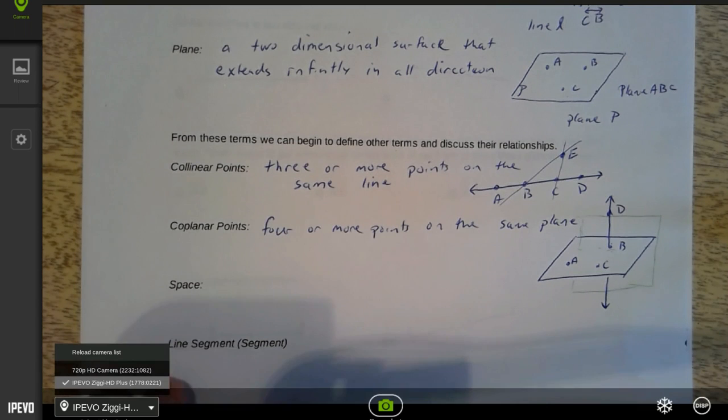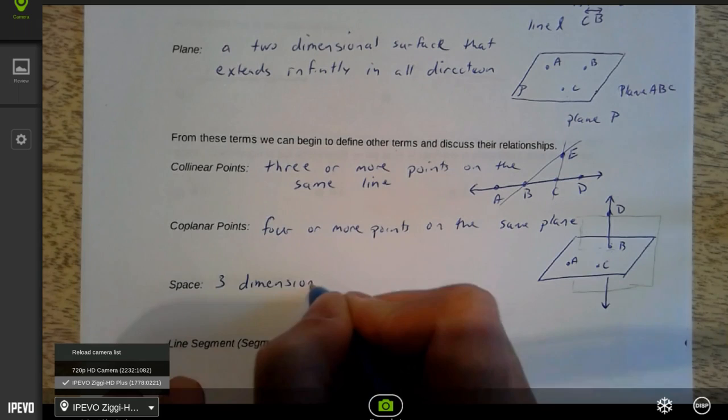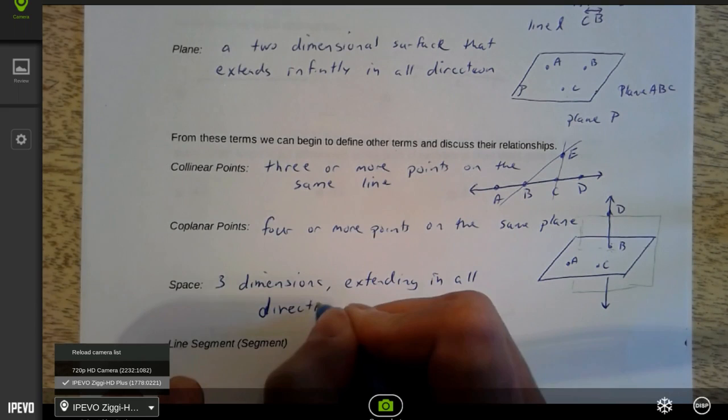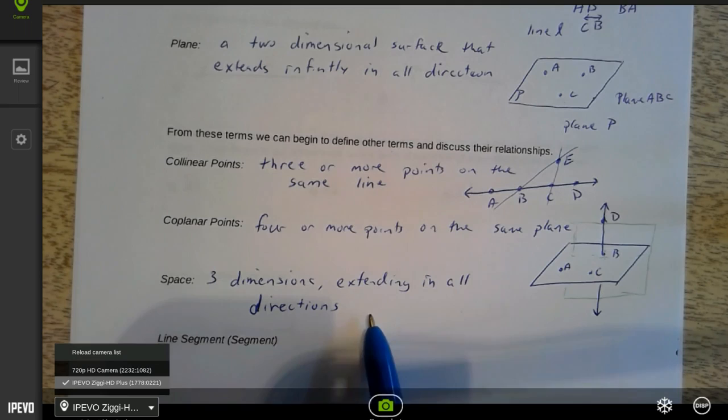Speaking of three-dimensional, that's what we get into is space. So, three dimensions extending in all directions. And that's where we tend to live. We live in a three-dimensional world. We live with a space. In fact, later on, we'll watch a neat video about that kind of thing, too.